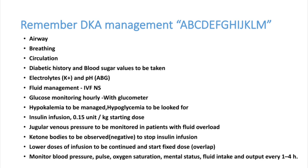Use a lower continuous insulin dose with a fixed dose, ensuring overlap between continuous infusion and fixed dose. Monitor blood pressure, pulse, oxygen saturation, mental status, and fluid intake/output chart. Calculate the total insulin dose required in the last 24 hours to establish the fixed dose — for example, if the patient took 100 units the previous day, take two-thirds, around 75 units, as the fixed dose.